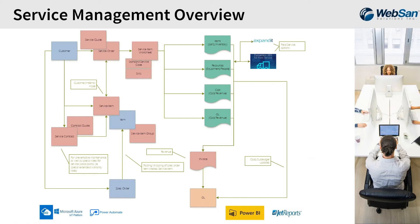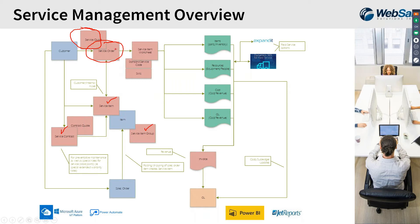This is the flow chart I bring up every time. Things are starting to come together — we've talked about all these different things in various contexts and they all come together in a service order. We're going to show you what a service quote is, which is essentially a predecessor to a service order. We've talked about service items, service contracts, and service item groups, and now we're going to look through the lifecycle of a quote to service order. We'll also cover returns — think of it as the reverse of a service order.